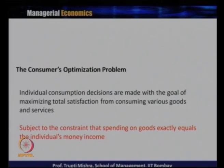For the producer, the optimization problem is to maximize output. Similarly, for the consumer the optimization problem is maximizing total utility — maximizing total satisfaction when consuming various goods and services. Today's focus is the consumer optimization problem: how to maximize satisfaction from a limited money income or limited budget.